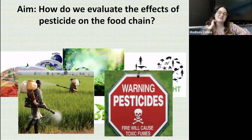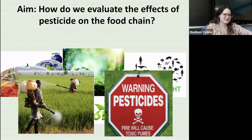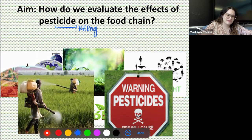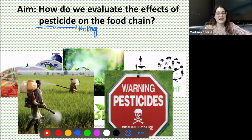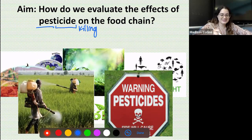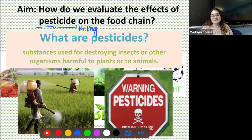This is day five of ecology and today we're going to be talking about how we can evaluate the effects of pesticide on the food chain. Whenever we see the suffix '-cide' at the end of a word, it means killing. So we're killing something — but what exactly is a pest? Well, if you live in an apartment, about once a month you probably have an exterminator come in for pest control, to kill tiny pests like cockroaches or insects. So pesticides are substances used to destroy insects or other organisms harmful to plants or animals.